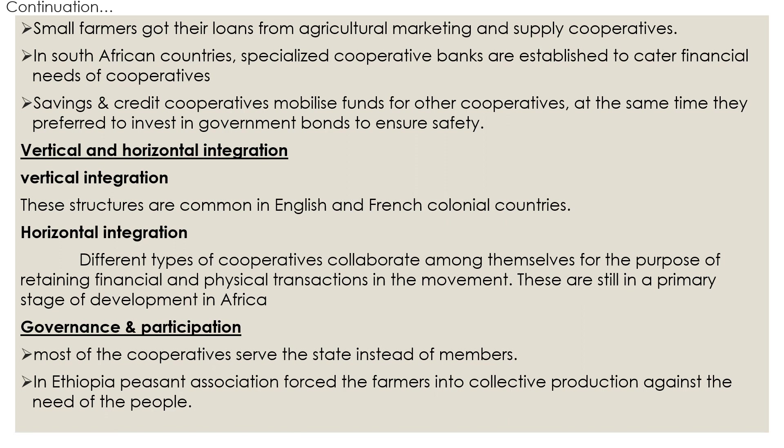In that country, the state forces members of agricultural society — the farmers — to produce products not required by the common people but created for the requirement of the state government, whether for export or other state purposes. Every government or state-sponsored movement should always consider the requirements of members and common people first. After fulfilling that, the government can pursue other goals. But in some countries the situation is the opposite.